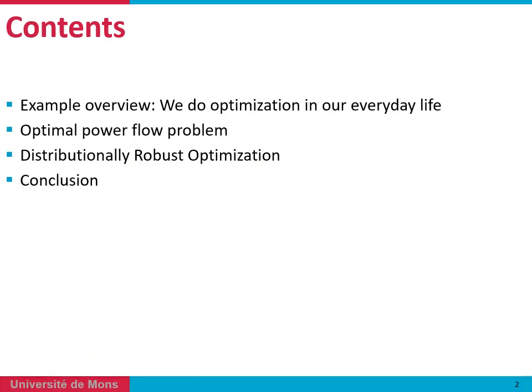About the contents: first we'll have a quick overview of our example and I will try to show how very complex mathematical ideas may look very natural when applied to a simple problem. Then I will introduce the optimal power flow problem, which is a power system application usually affected by uncertainties. And then we'll discuss what distributionally robust optimization is and what it can bring to our problems.